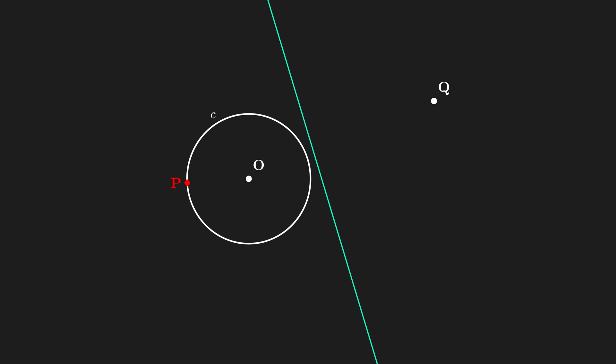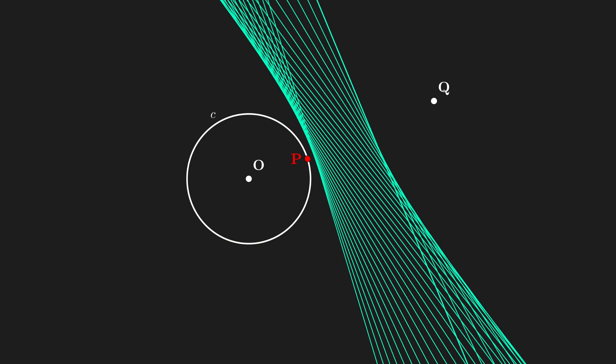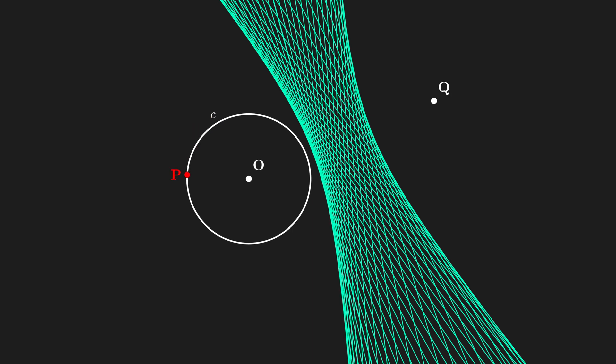Now let's see what happens when P moves around the circle and draw perpendicular bisectors for each position of P. As you can appreciate here, the family of straight lines outline now something resembling a hyperbola.